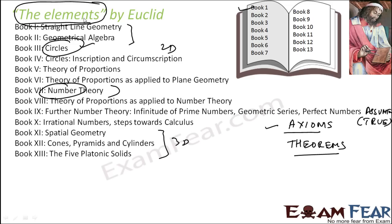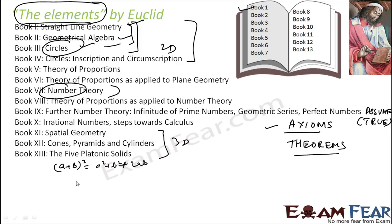The book 'Elements' begins with plane geometry — straight lines, geometrical algebra, circles — and then moves into solid 3D geometry. The algebra in this book is explained using geometrical language. For example, the expression (a + b)² = a² + b² + 2ab can be explained using geometry.